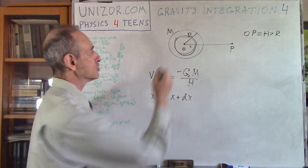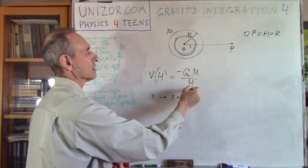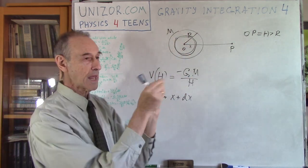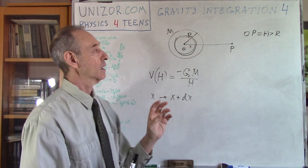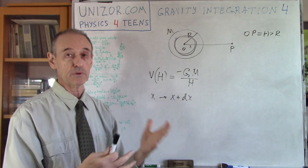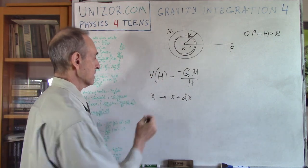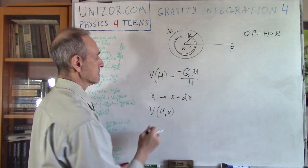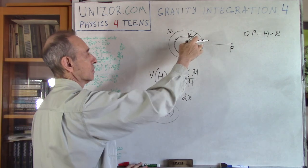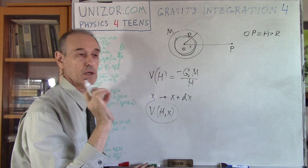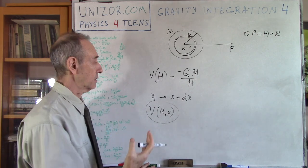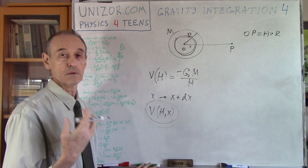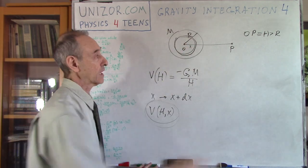H is exactly the same for all these shells, so H is constant. The only thing which is variable is mass — the mass of this spherical layer, which depends on the radius X. We can calculate the gravitational potential V(H, X) of this infinitesimally thin spherical shell. I will calculate this and then integrate it by X, and that gives me the entire gravitational potential at this particular point.